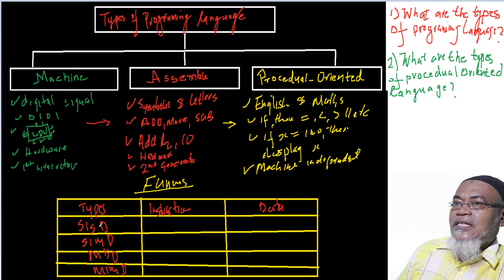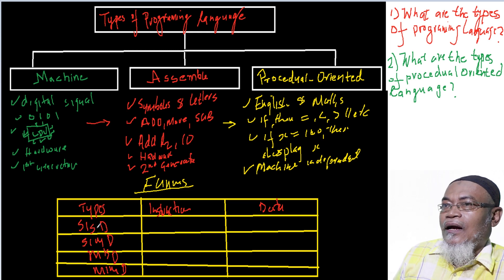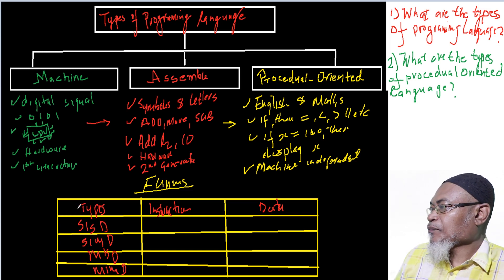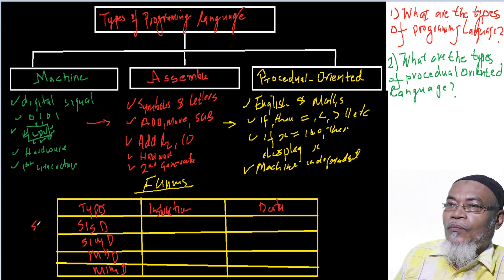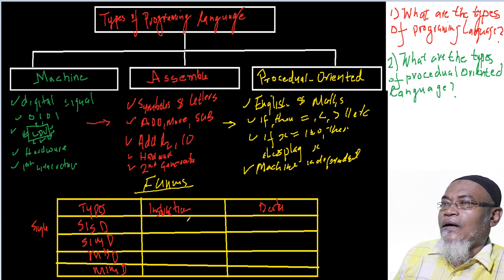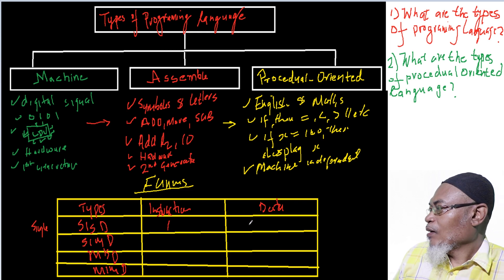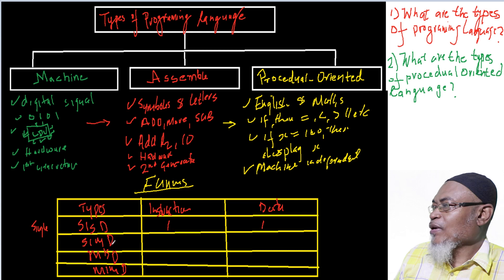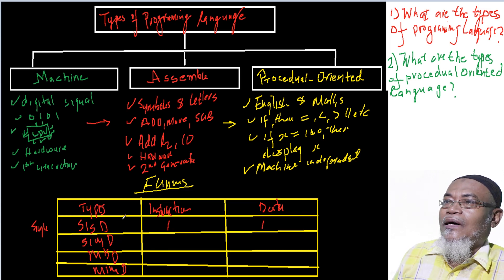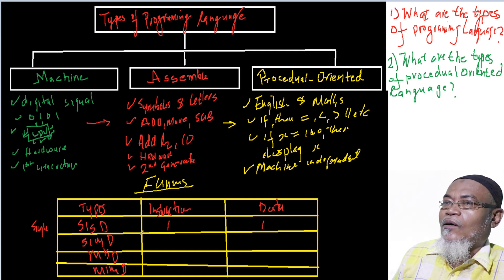SISD stands for Single Instruction, Single Data. This type of architecture was based on a single-core computer and operates on one instruction upon one data stream. Essentially, it is a unicore computer architecture with one CPU acting on one instruction and one data set.